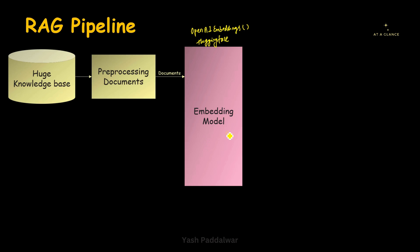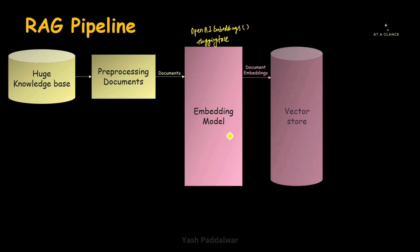Once the embeddings of the documents are created, we will have to store them. Since this data is in the form of vectors, we'll have to store it in a special database called a vector store. Here we store the document embeddings in the vector store, which is also called a vector database. There are a lot of vector databases available — open source as well as paid ones. We can use any one of them and store the embeddings so that in future we can use this data for searching as well as for clustering.